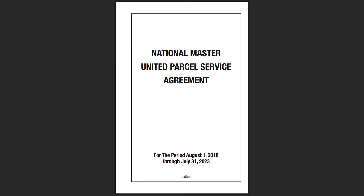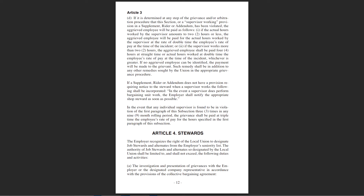We're going to go ahead and get right into the reading. Article 4, Stewards. The employer recognizes the right of the local union to designate job stewards and alternates from the employer's seniority list. The authority of job stewards and alternates so designated by the local union shall be limited to and shall not exceed the following duties and activities.